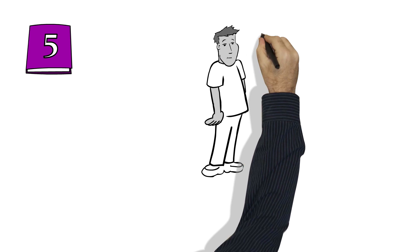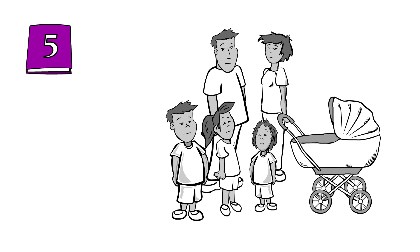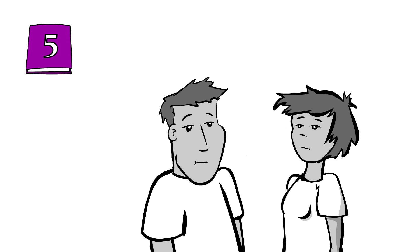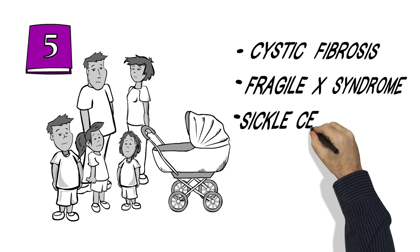Results in category 5 assess whether you are a carrier of a gene that might cause disease in your children and your relative's children, but does not cause problems for you. So for example, cystic fibrosis, fragile X syndrome, sickle cell anemia.